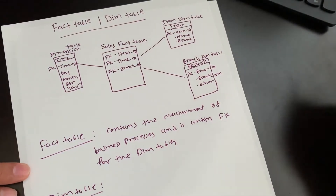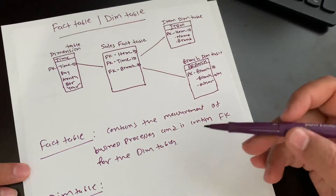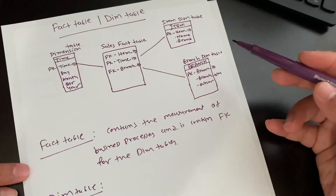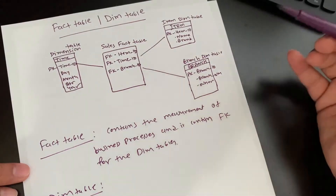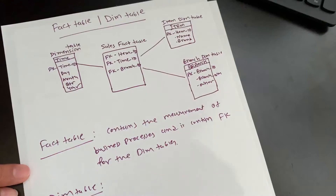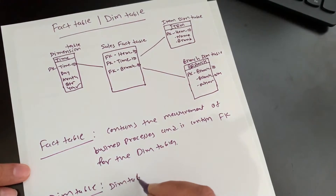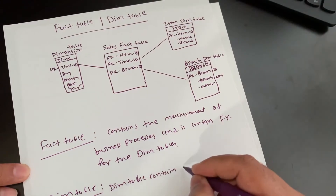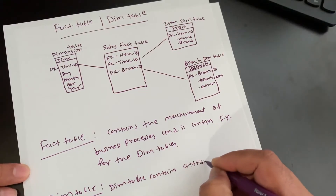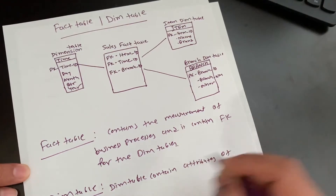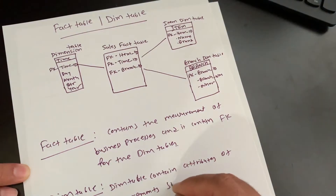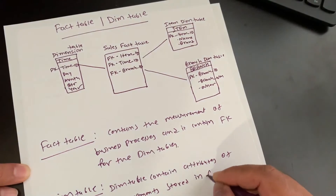Now let's look at what a dimension table is. A dimension table is a table which contains attributes of measurement stored in the fact table. It holds descriptive or textual values. The definition is: the dimension table contains attributes of measurement stored in the fact table.